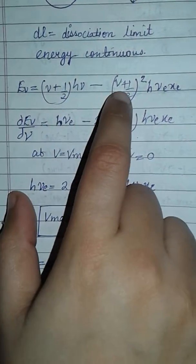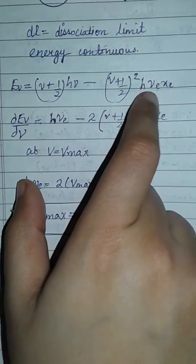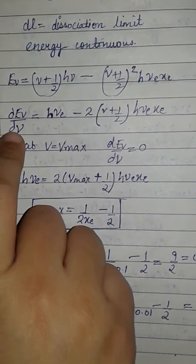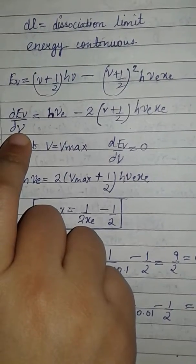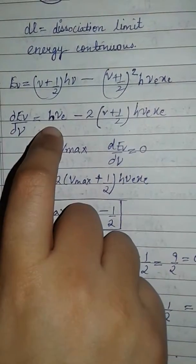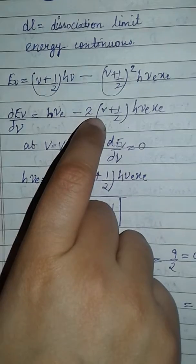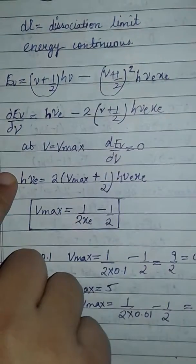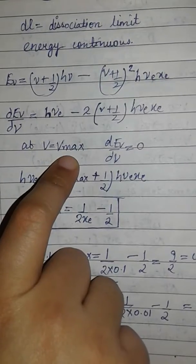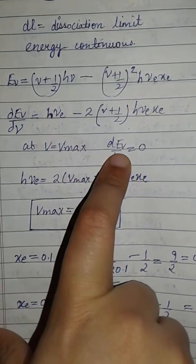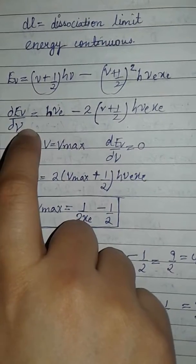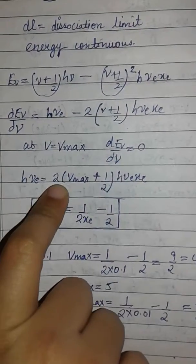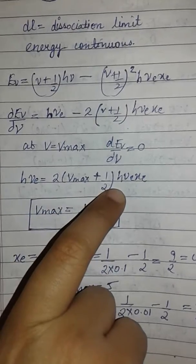We know the energy for anharmonic oscillation is E_V = (V + 1/2)hν_e minus (V + 1/2)² hν_e X_e. Differentiating with respect to V: dE_V/dV = hν_e minus 2(V + 1/2)hν_e X_e. At V = V_max, dE_V/dV = 0, giving hν_e = 2(V_max + 1/2)hν_e X_e.